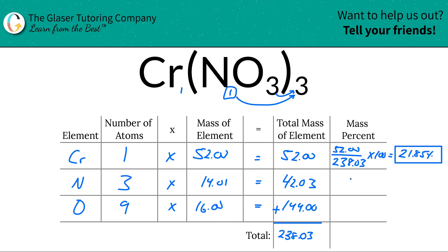Then we would do the same thing for nitrogen. The percent of nitrogen is going to be the total mass of that nitrogen. So it's going to be 42.03 divided by the total mass of the entire compound, 238.03. Multiply that by 100. And this is going to work out to be about 17.66 percent.